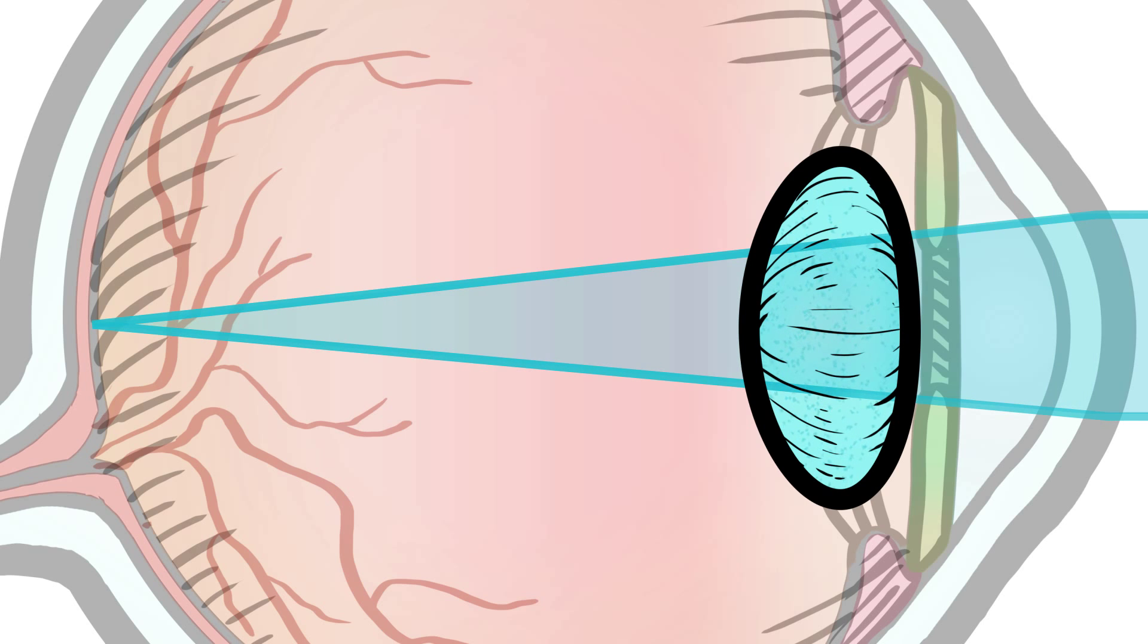However, as we age, proteins in the lens can start to clump together and cloud a small area. This is called a cataract. Over time, the cataract can become larger.